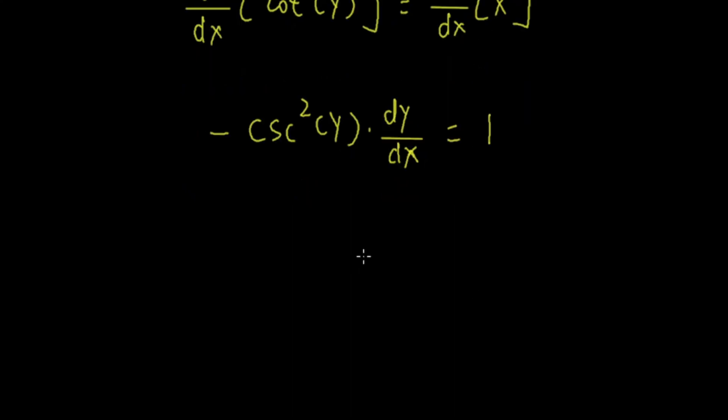Isolate dy/dx by dividing both sides by negative cosecant squared y. We have dy/dx equals... Now I will move the negative sign out. That will be negative 1 over cosecant squared y.